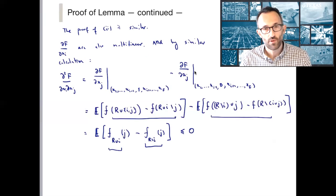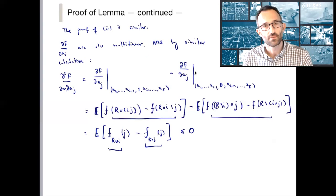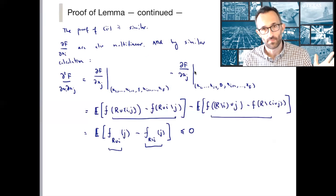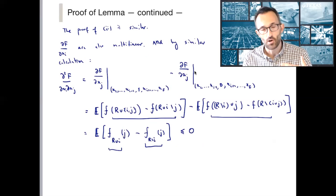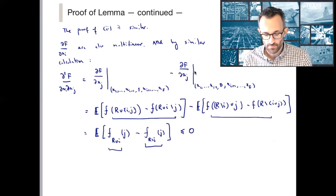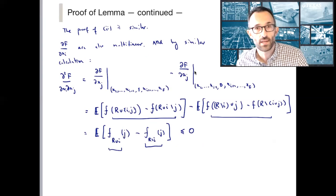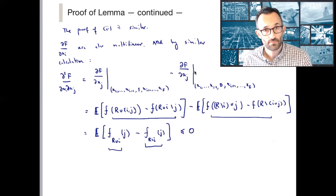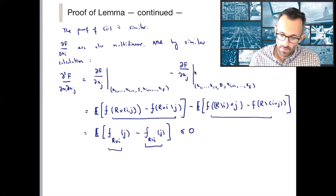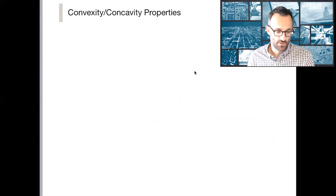To summarize what we've proved: if little f is monotone — without needing submodularity — then all partial derivatives of F are non-negative, meaning the gradient is a component-wise non-negative vector. Separately, if little f is submodular — without any need for monotonicity — then all second cross-partial derivatives of F are non-positive. These give us immediate consequences that we state as a corollary.